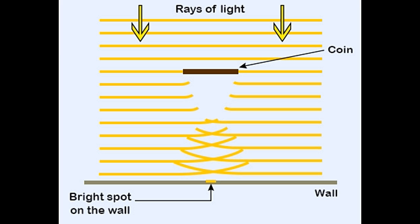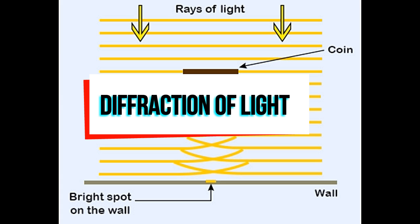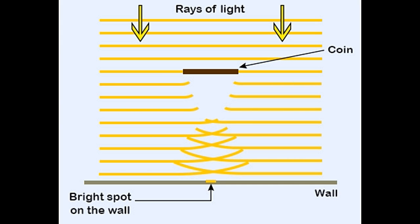For many years, scientists had debated on whether light is a linear stream of particles or a wave. Many of light's behavior and properties led to the conclusion that it must be a stream of particles. However, the discovery of diffraction of light proved that it had wave-like qualities as well.